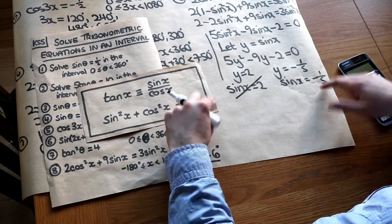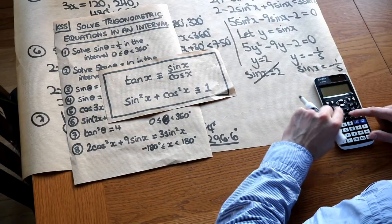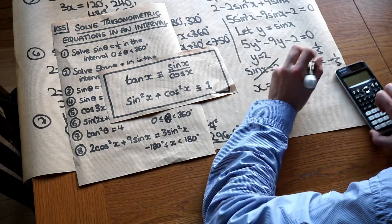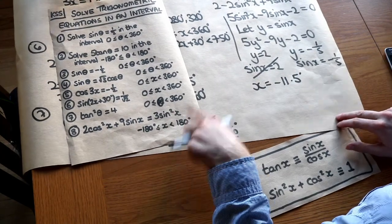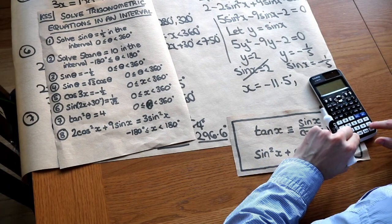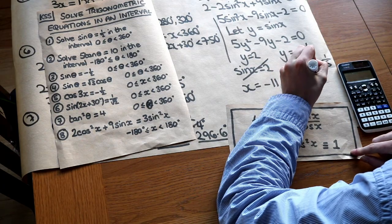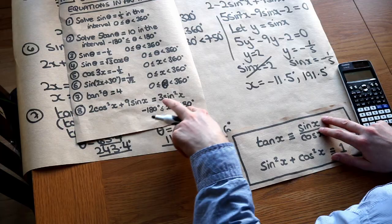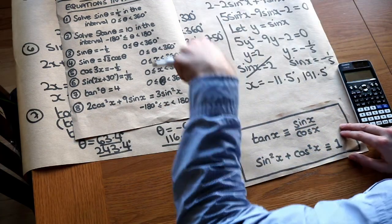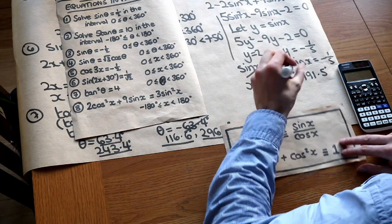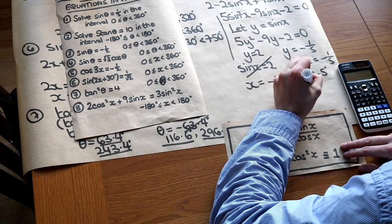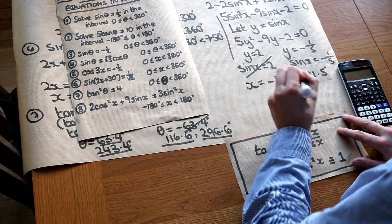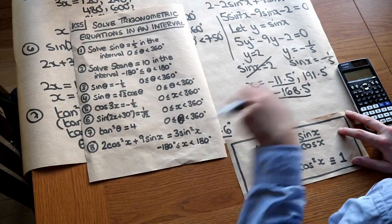This is quadratic in form. Let y equal sin of x, giving 5y squared minus 9y minus 2 equals 0. Using the quadratic solver gives y equals 2 or y equals minus one fifth. Since sin of x only goes between minus 1 and 1, sin x equals 2 has no solutions — strike that through. Sin x equals minus one fifth is valid. Inverse sine of minus one fifth gives minus 11.5 degrees, which is in our range. Subtracting 360 gives minus 168.5 degrees, also in range. Subtracting minus 11.5 from 180 gives 191.5, which is outside the range. So our two solutions are minus 11.5 and minus 168.5 degrees.